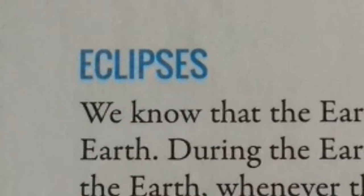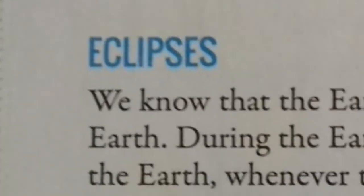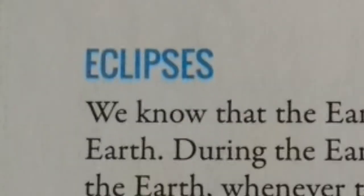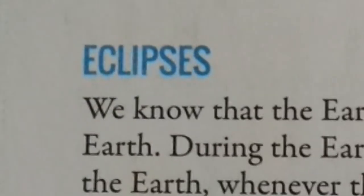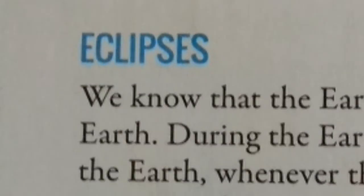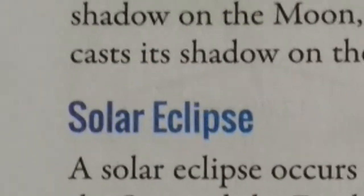Or in simple words we can say that when the earth or the moon comes in the way of the sun's light, they block the light and cast a shadow. This event causes an eclipse. Now let us study about solar eclipse.